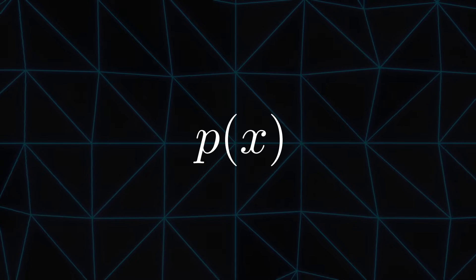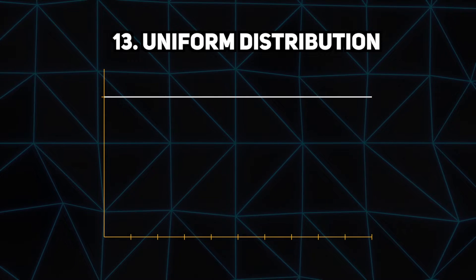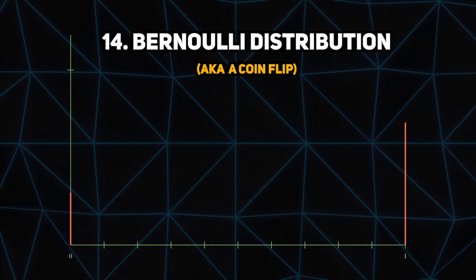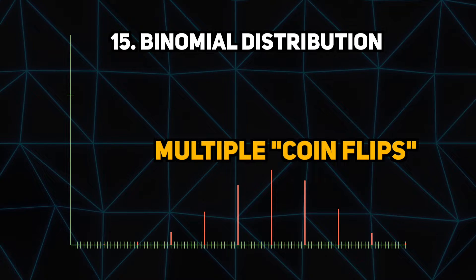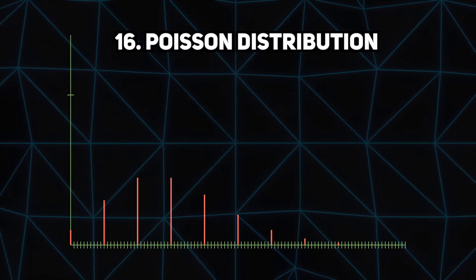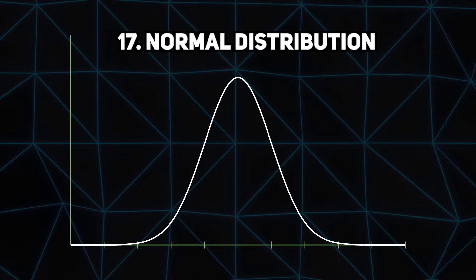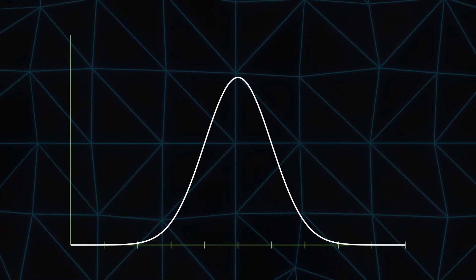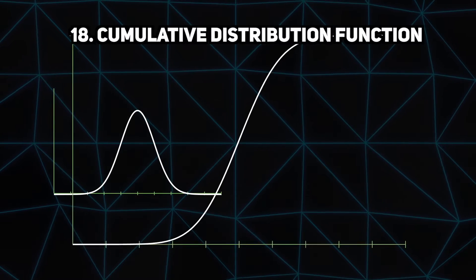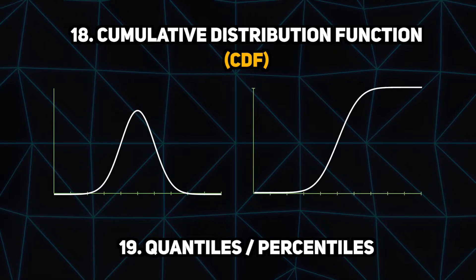Technically the distribution can take any shape, but there are a few common ones you need to know about. The uniform distribution tells us that all values are equally likely. The Bernoulli distribution describes binary data and tells us how likely we'll observe a 1, which we call a success. The binomial distribution tells us the probability for multiple coin flips or successes. The Poisson distribution describes counts. And the most famous distribution of all is the normal distribution, which has a characteristic bell shape and is used everywhere in statistics. There's also the cumulative distribution function, or CDF, which is useful for defining quantiles and percentiles of a random variable.